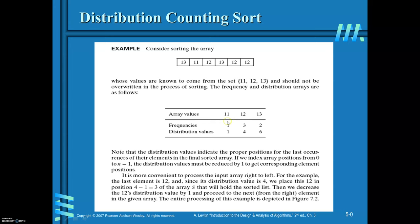For that, you are required to count the frequencies for the array's distinct values. Here, distinct values are 11, 12, 13. First, find out the frequency: for 11 it is 1, for 12 it is 3, and for 13 it is 2. Then, find out the distribution value. This is in order to place the values in the array. So: 1 plus 3 is 4, and 4 plus 2 is 6. Like this, you are required to find out the distribution values.